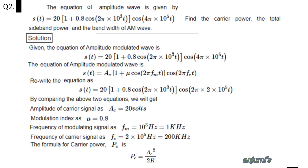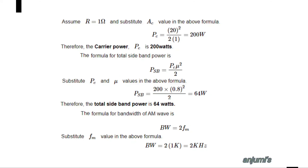Formula for carrier power: PC = AC² divided by 2R. Since R is not given, we assume R = 1 ohm and substitute AC value. We get PC = 20² / (2 × 1) = 200 watts. Therefore, the carrier power PC is 200 watts.